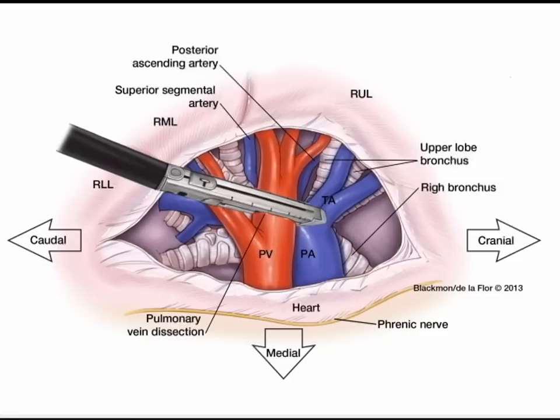When performing a video-assisted thoracoscopic right upper lobectomy, after the posterior pleural dissection and mediastinal lymph node dissection have been performed, you approach the anterior hilum of the lung. Dissecting and dividing the pleural surface exposes the superior branches of the superior pulmonary vein. Be careful to dissect the pulmonary vein branches going to the right middle lobe and preserve them, dividing only those branches going to the right upper lobe. This dissection can be performed with an endokitner, a peanut, a tonsil sponge attached to a sponge stick, or with blunt or sharp dissection.